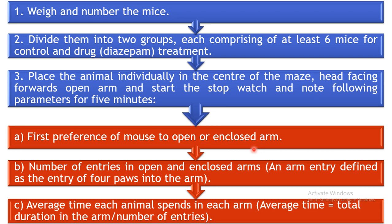Note the first preference of the mouse — whether it goes to the open arm or the enclosed arm. Second, note the number of entries in the open and enclosed arms. An entry is counted when the animal places all four paws inside the arm. Next, calculate the average time each animal spends in each arm, which is given by the total duration in that arm divided by the number of entries into that arm. Calculate this individually for the open arm and the enclosed arm for all animals.